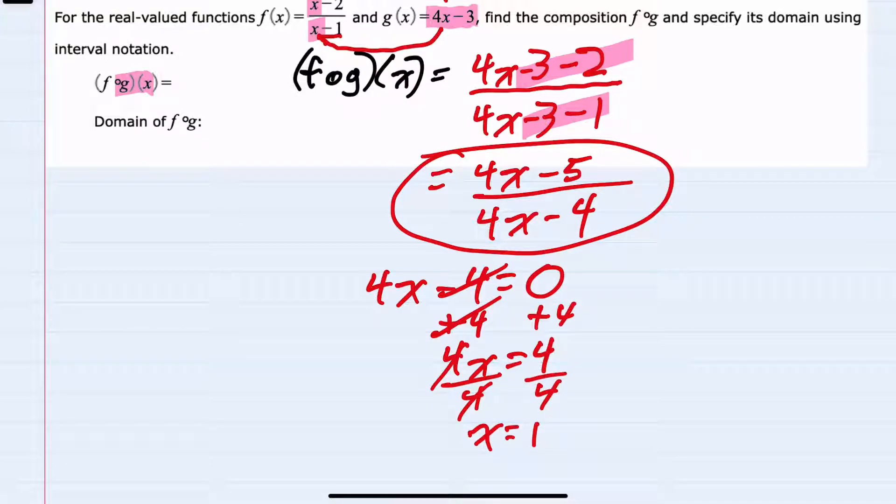Which tells me that in my new function, when x equals 1, the denominator would be 0. I want to exclude that from the domain.